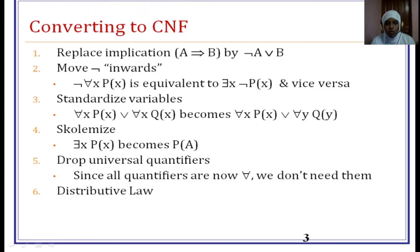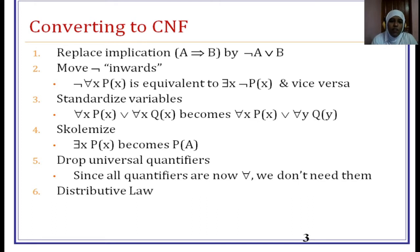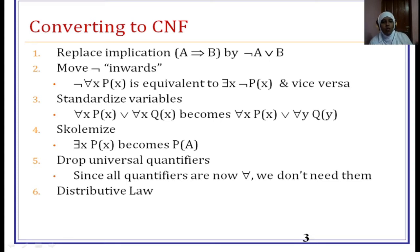These are some rules to convert given predicate logic sentences to the conjunctive normal form. First rule: whenever there is an implication, we have to remove the implication. Suppose the form is A implies B; we have to rewrite the sentence as negation of A, OR B.